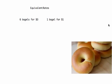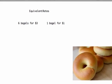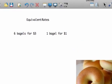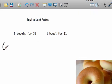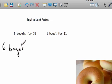Equivalent rates. Okay, six bagels for three bucks or one bagel for one buck — which would you rather have? It depends on how hungry you are, but if all things are equal and you're just looking for the best deal, I'd use a unit rate. You could also do a ratio table or graph it — there are so many ways to go.